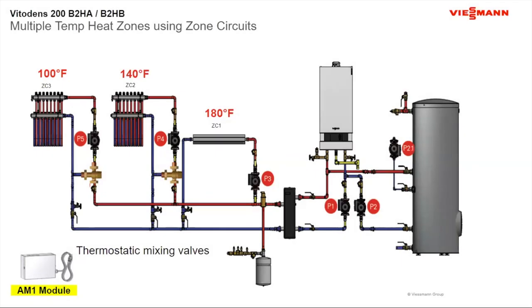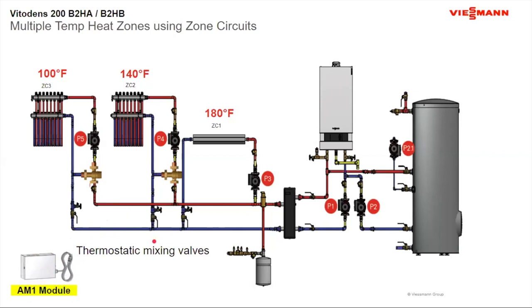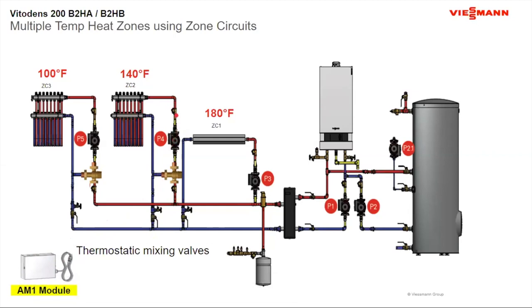So now you can see three different temperatures going right to the boiler: one high temp on ZC1, one medium temp on ZC2, and one low temp on ZC3. This example uses thermostatic mixing valves. If you use our mixing valves, they have a control box similar to the AM1 module that plugs into the wall. It controls the pump, has a strap-on sensor to check mixed outlet temperatures, and constantly modulates to maintain the proper temperature.